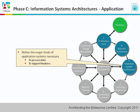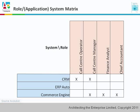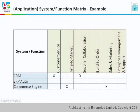Let's look at a couple of application artifacts first. Here we have the role-to-system matrix, where we've got our roles from the business architecture across the top, and then our applications down the side, and the cells show the relationship between those. Next, we have a system-to-function matrix, with business functions across the top, applications down the side, and the relationships themselves.